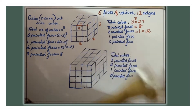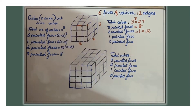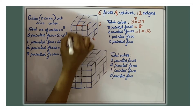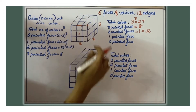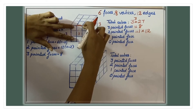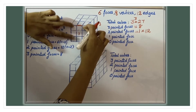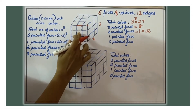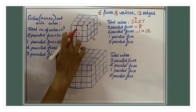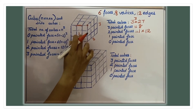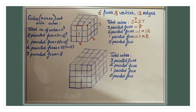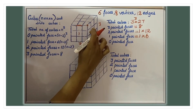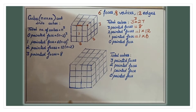How many cubes are one face painted? For one-face-painted cubes, take a face. In that face, only one cube in the center is one face painted — the corner cubes are three faces painted and the edge cubes are two faces painted. So in one face there is one cube that is one face painted, and a cube has six faces. So one into six gives us six cubes that are one face painted.